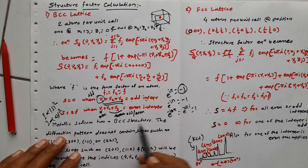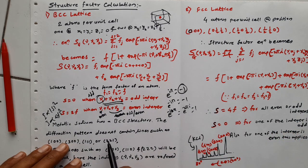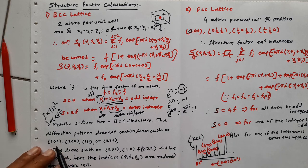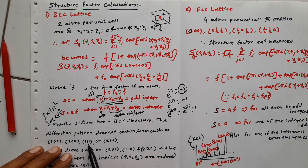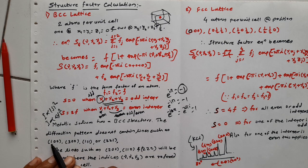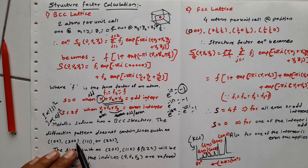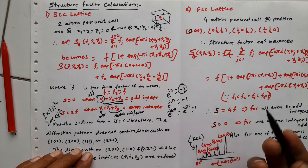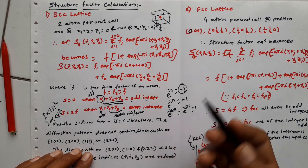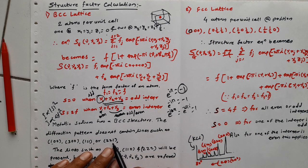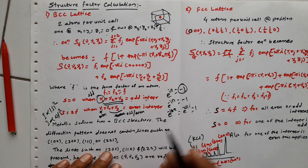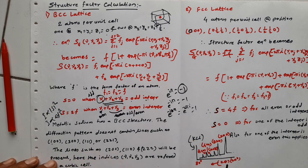For example, metallic sodium has a BCC structure. The diffraction pattern does not contain lines such as (100) — where 1+0+0=1 is odd — or (300) where 3+0+0=3 is odd. Also (111) where all three are odd: 1+1+1=3, odd — no peak. Combinations like two even and one odd, such as (002), also give no peak. From all these cases where the sum is odd, we will not get any reflection.